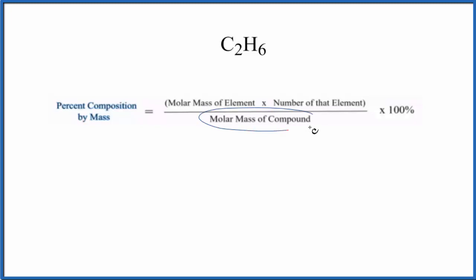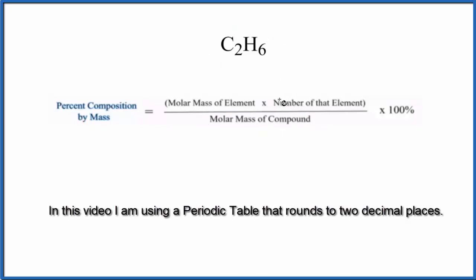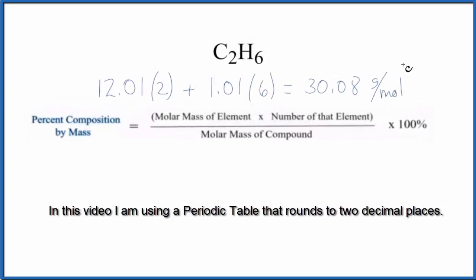We need to find the molar mass for the entire compound, C2H6. When we do that, this is what we end up with: 30.08 grams per mole.